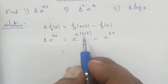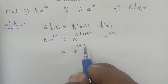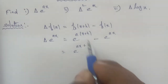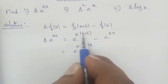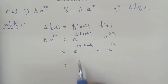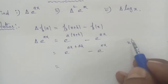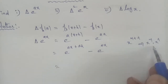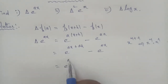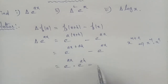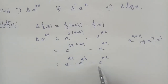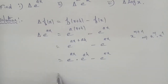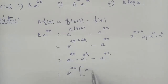That gives us e power of x plus h minus e power of x. In the power term, e power of x plus h equals e power of x into e power of h. So e power of x into e power of h minus e power of x. Taking e power of x as common and removing it, the result is e power of x into e power of h minus 1. That is Subdivision 1 answer.